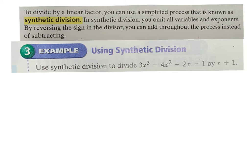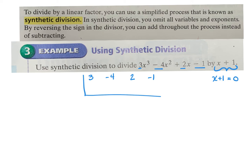Once you see the process it makes more sense. You take the coefficients of the polynomial — 3 from x³, −4 from x², 2 from x, and the constant −1 — and place them in a row. Then instead of using the full binomial, you set it equal to 0 and use that zero value: for x + 1, the zero is −1, and that's what you use for synthetic division.